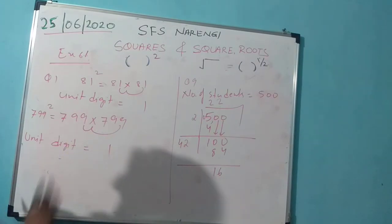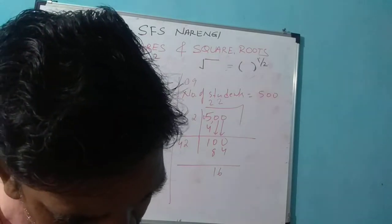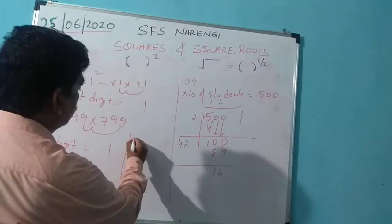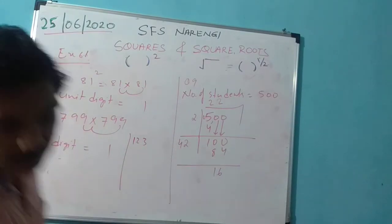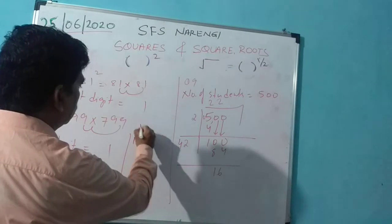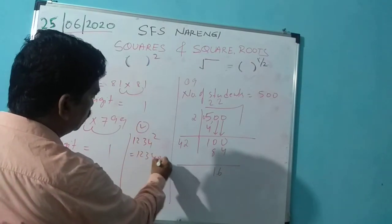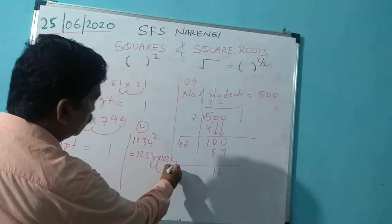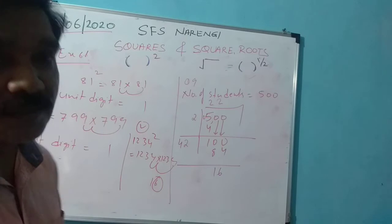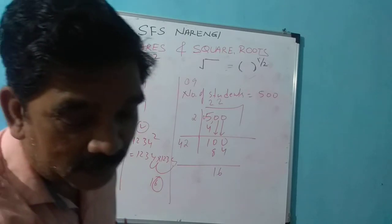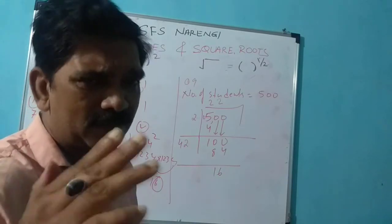Another example: 709 squared — here 9 × 9 = 81, so the unit digit is 1. For 1234 squared: 4 × 4 = 16, so the unit digit is 6. Questions 3, 4, and 5 are given as homework — try them yourself.